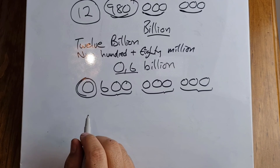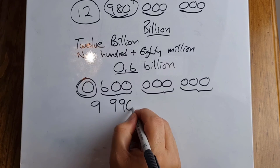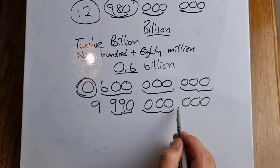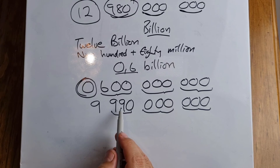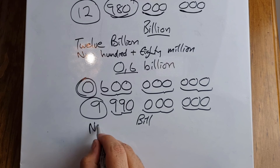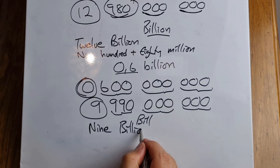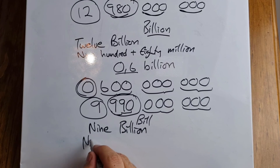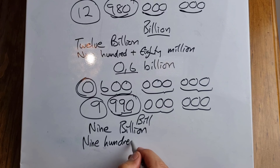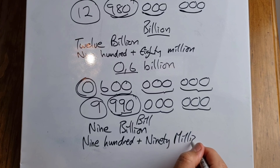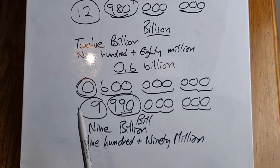Let's look at one more. Look at the groupings: 3, 6, 9 — that tells me it's billion. Do I have a number here to the left? Yes, so that's telling me it's 9 billion. But does it end there? No, because again I've got this number over here which is in the millions — and that is 990 million. So what's my number? How do I read this number? It's 9,990,000,000.